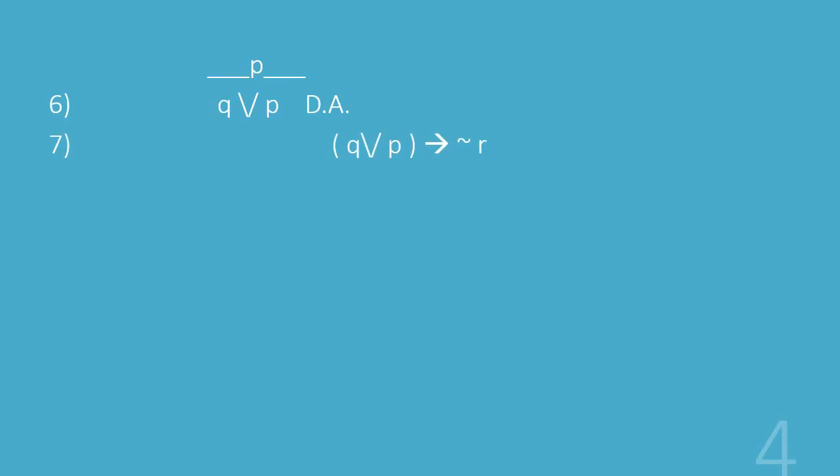Now the reason we wanted q or p is because of the last premise that we have, the q or p implies not r. We wanted to get that q or p statement together and we have it from step six here. So we now have a conditional, the first part of the conditional, and therefore the conclusion is not r by modus ponens, and notice that was our desired conclusion.